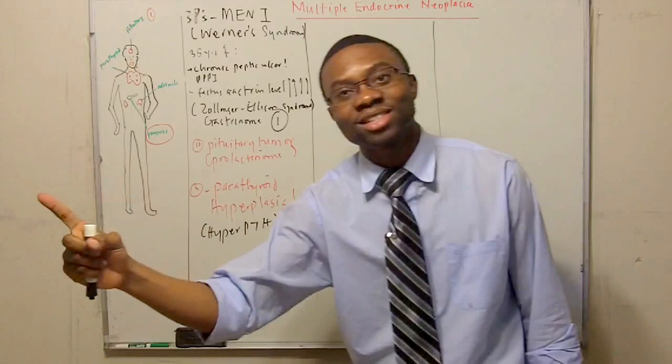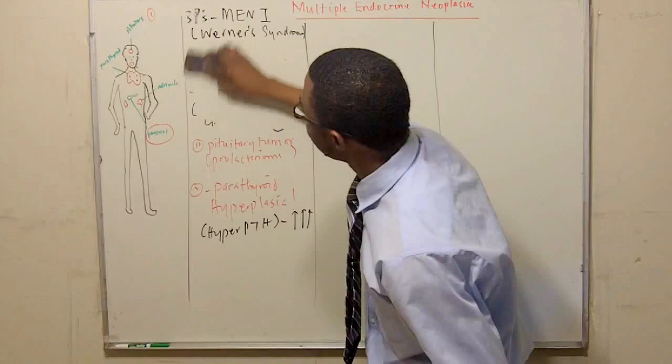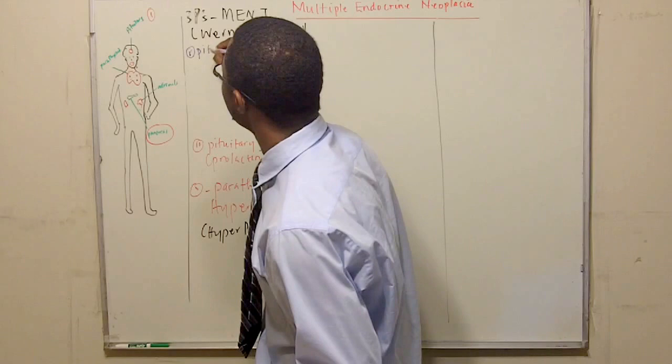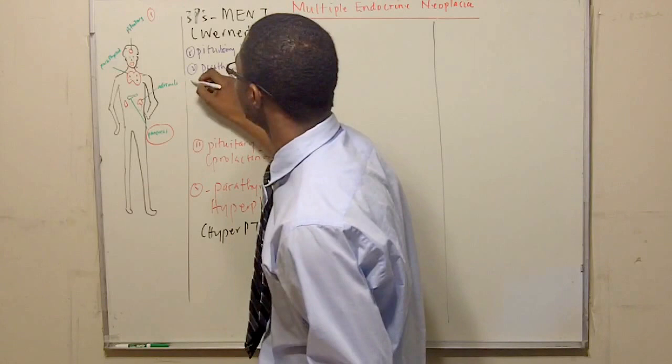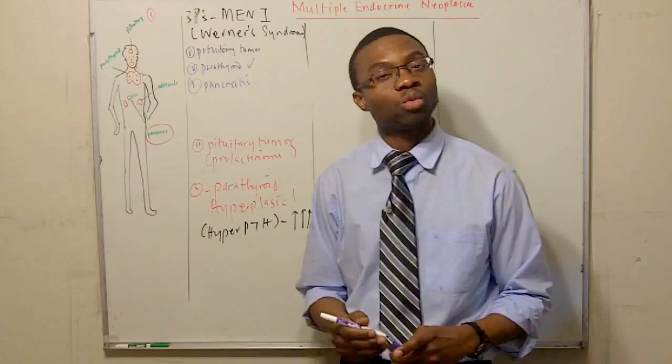So, what are the three P's? Now we got to actually write them out. This was supposed to be a case. So the three P's are one, pituitary tumor, parathyroid tumor, and last but not the least, a pancreatic tumor. See that? Pituitary, parathyroid, and pancreas. That's Werners syndrome. That's how you remember that. Three P's.